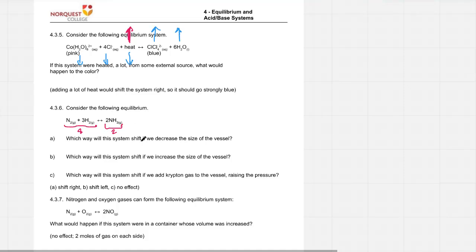And B, if we increase the size of the vessel, the exact opposite. If you relax the pressure on something and let it expand, it will stretch out and go towards its bigger side. So larger vessel, the system will go left, where there's four moles of gas instead of two.